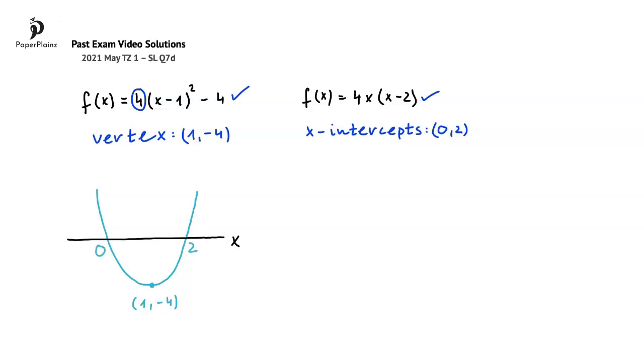We are looking for the values of x where the graph is negative and increasing. Looking at the graph, we can see that it is negative, in other words under the x-axis, and increasing here.